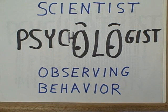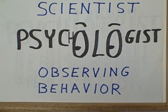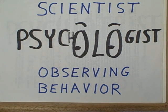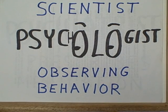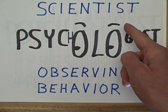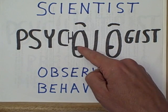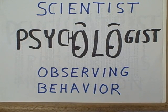A psychologist is a scientist who studies behavior in humans or animals. Look at the word psychologist — notice that it repeats the letter O twice. I've drawn the letter O very large, and I've made each of these O's look like a human eye with little eyebrows and little pupils. Notice that those two eyes are open very wide in order to observe something.